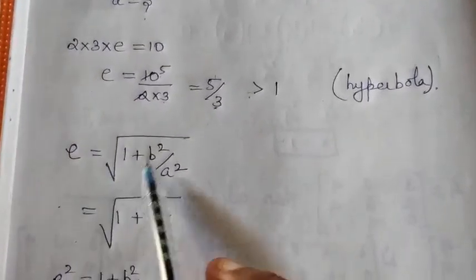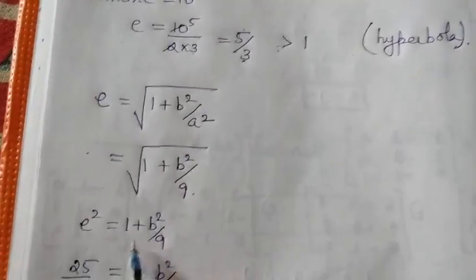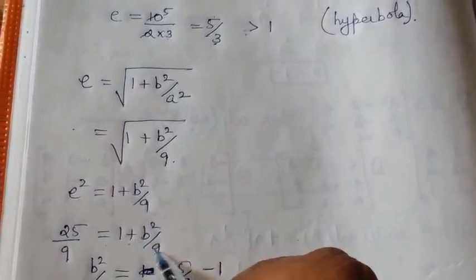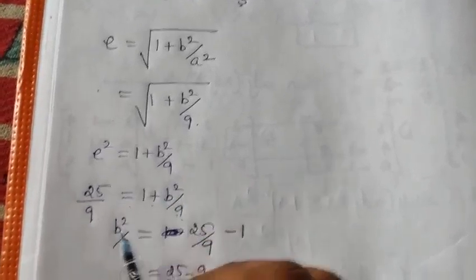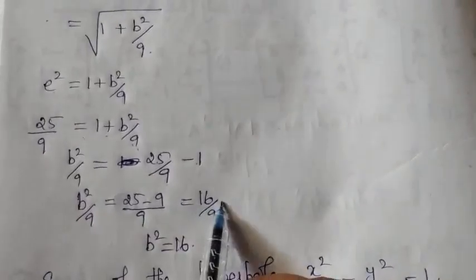Using the formula e equals the square root of (1 + b²/a²), we get e² equals 1 + b²/9. Substituting e = 5/3: (5/3)² equals 1 + b²/9, so 25/9 equals 1 + b²/9. Therefore b²/9 equals 25/9 minus 1, which gives b²/9 equals 16/9, and so b² equals 16.